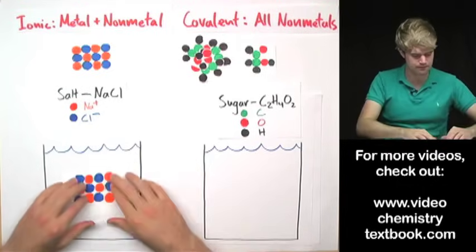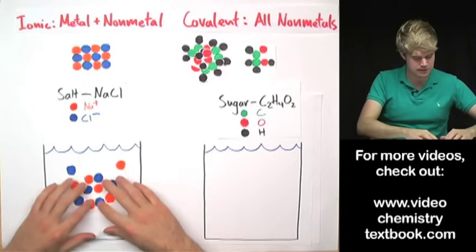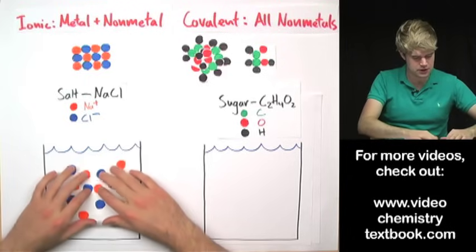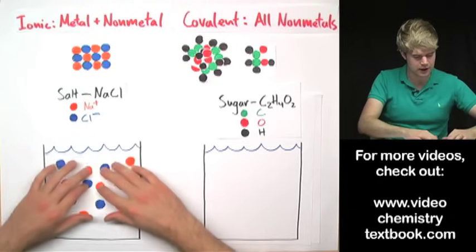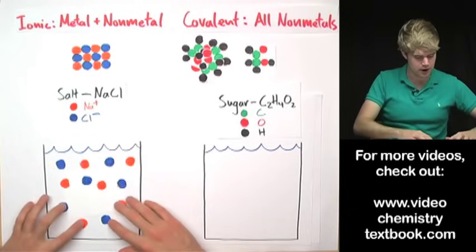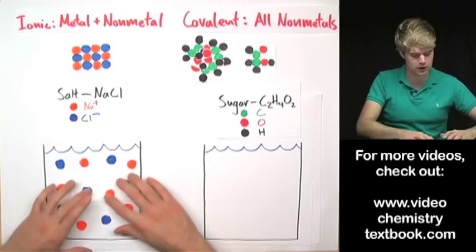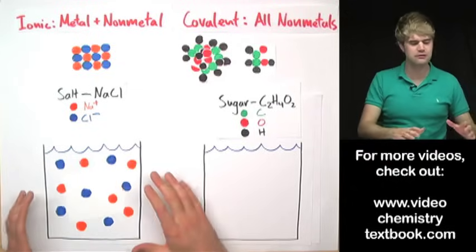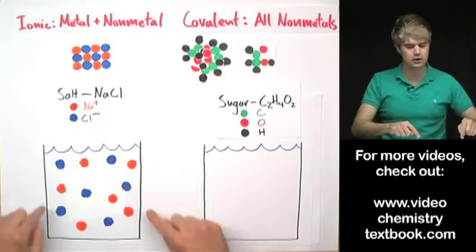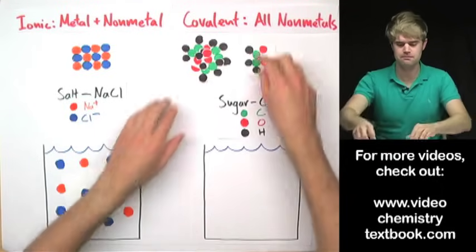With our atomic vision, we're going to see that the atoms that make up this salt are going to come apart from each other. They're going to break apart and they're all going to start floating around in the water individually. This is what it looks like when salt dissolves.